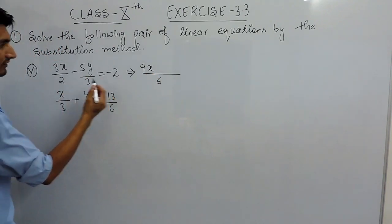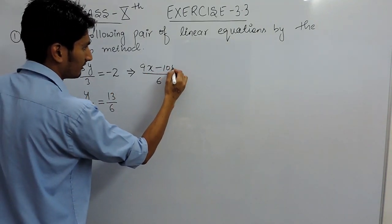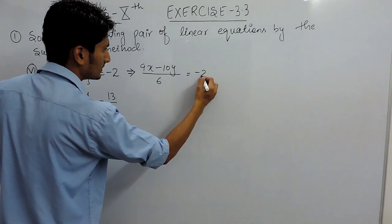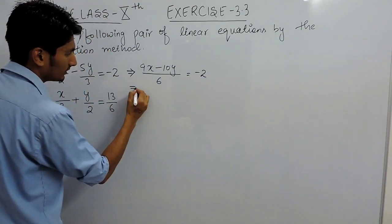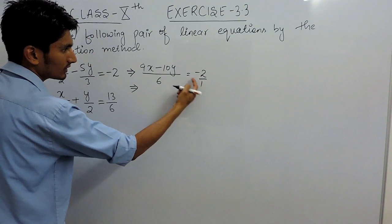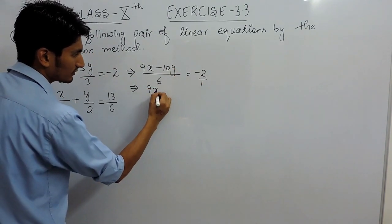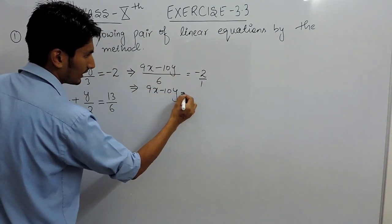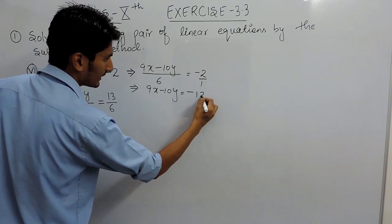That is 9x, and 2 by 5, that is 10y, and that is equal to minus 2. After that we can cross multiply, so this multiplied by this, so this will remain as it is and this multiplied by this is minus 12.